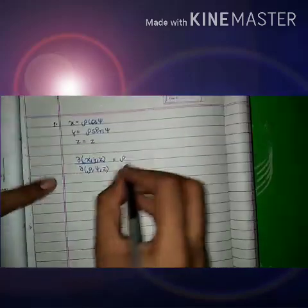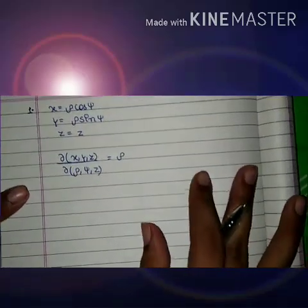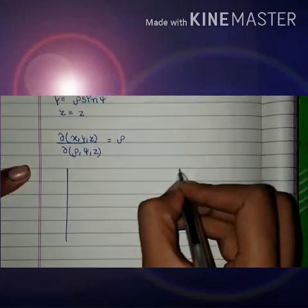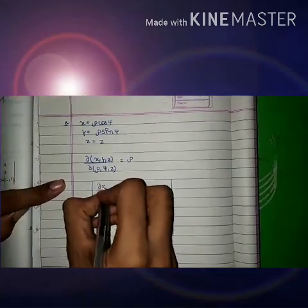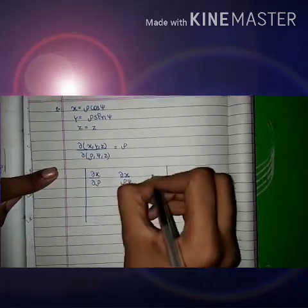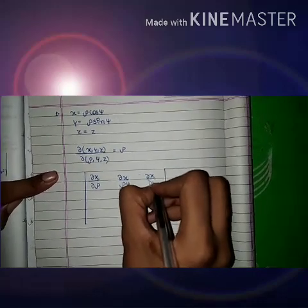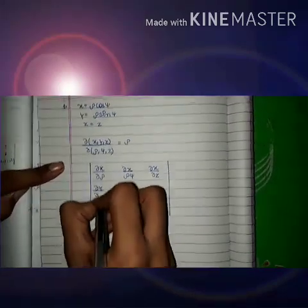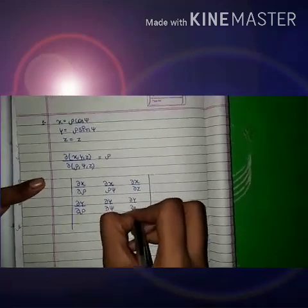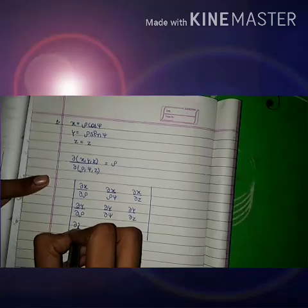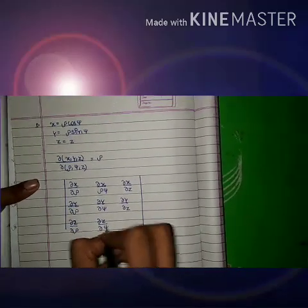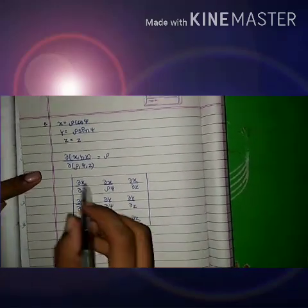So first we will write this in the form of a determinant. We need: ∂x/∂ρ, ∂x/∂ψ, ∂x/∂z in the first row; ∂y/∂ρ, ∂y/∂ψ, ∂y/∂z in the second row; and ∂z/∂ρ, ∂z/∂ψ, ∂z/∂z in the third row.